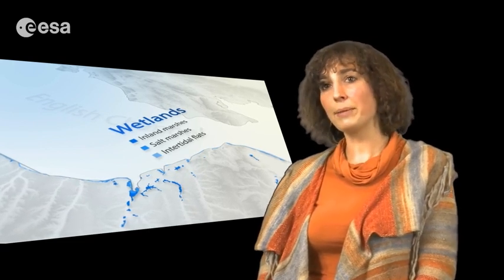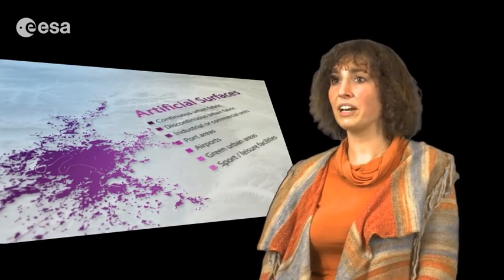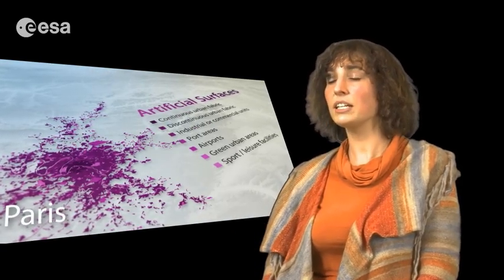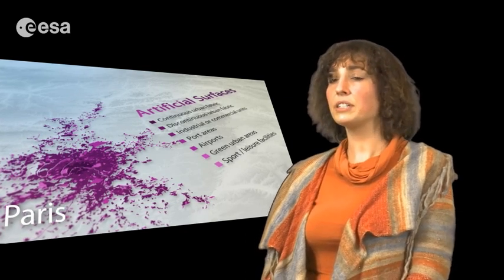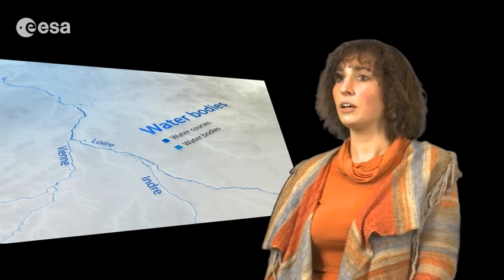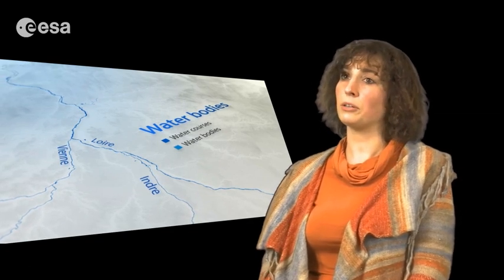We have generated three global land cover maps over 2000, 2005 and 2010 epochs, each epoch being representative of a five-year period. And for this we have used the entire archive of two different satellites, the MERIS and the SPOT Vegetation one.